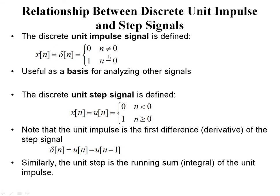Next we have the relation between a unit impulse and a step signal. δ(n) represents the impulse and u(n) represents the unit step. The relation between the unit impulse and unit step is given below.